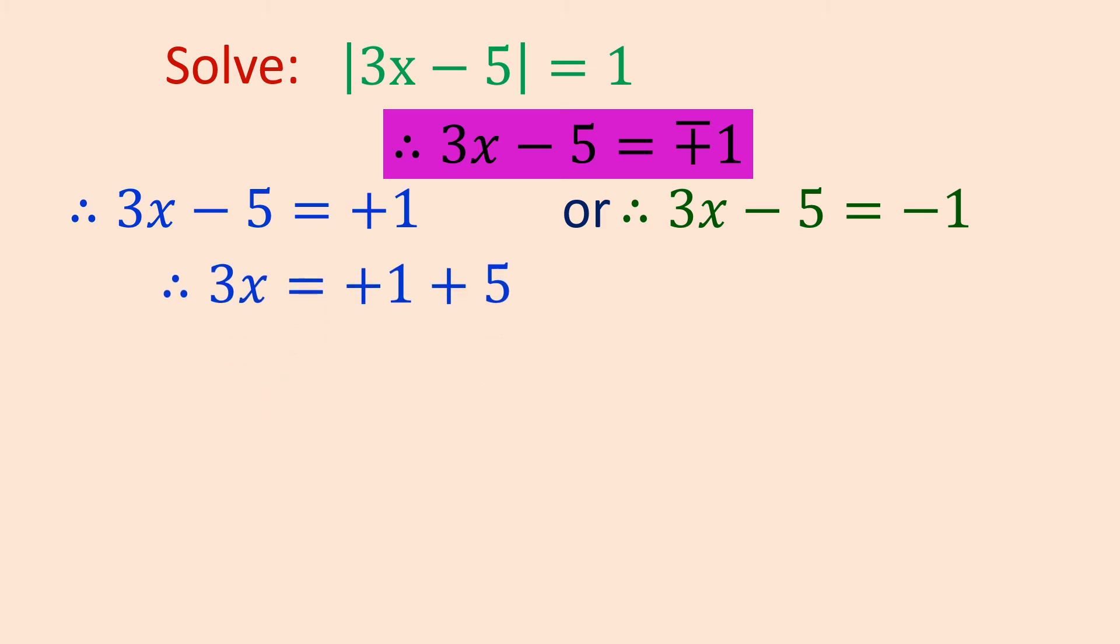Therefore, 3x equals plus 1 plus 5. The minus 5 which is on the left side will be transferred to the right side of the equal sign, so the sign will change.